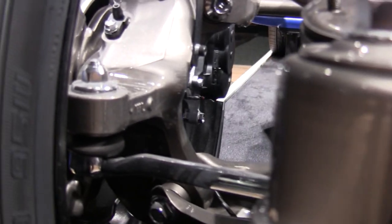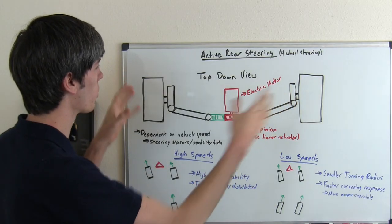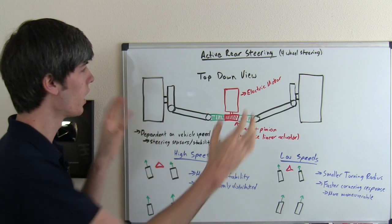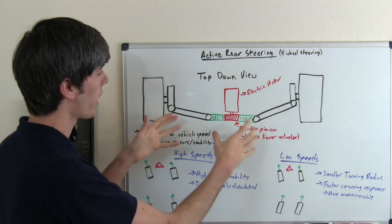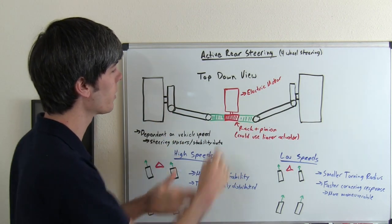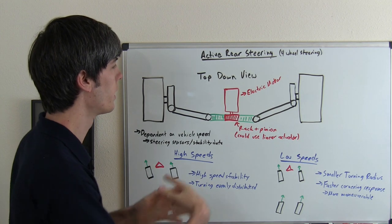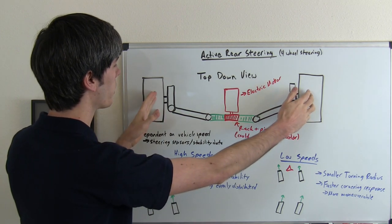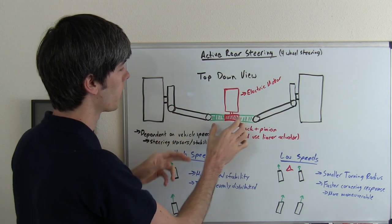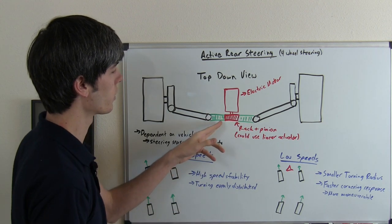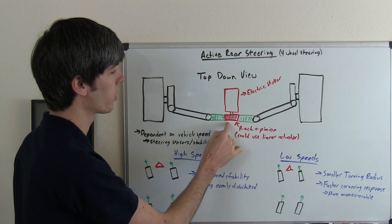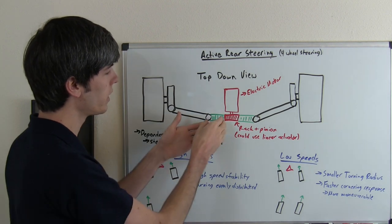Rear wheel steering is actually pretty straightforward. What we're looking at here is a top-down view of the two rear wheels. I've set up a rack and pinion system, which is one method this could be done. We've got our two rear wheels and these connecting arms which are controlled by this rack and pinion, and we've got an electric motor with a gear on it.